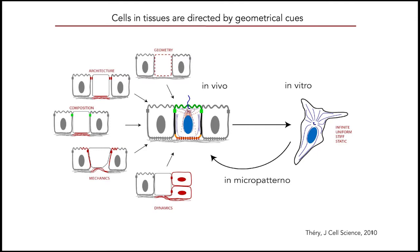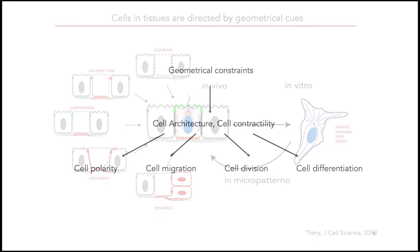In vivo, cells are generally submitted to geometrical, structural, and mechanical constraints that direct their intracellular organization and behavior in tissues. When cultured in vitro, all this information is lost and cells are on infinite, uniform, stiff, and static substrates. But by using micropatterns, it is possible to recapitulate the constraints that cells are submitted to in vivo and allow them to orient in space again.